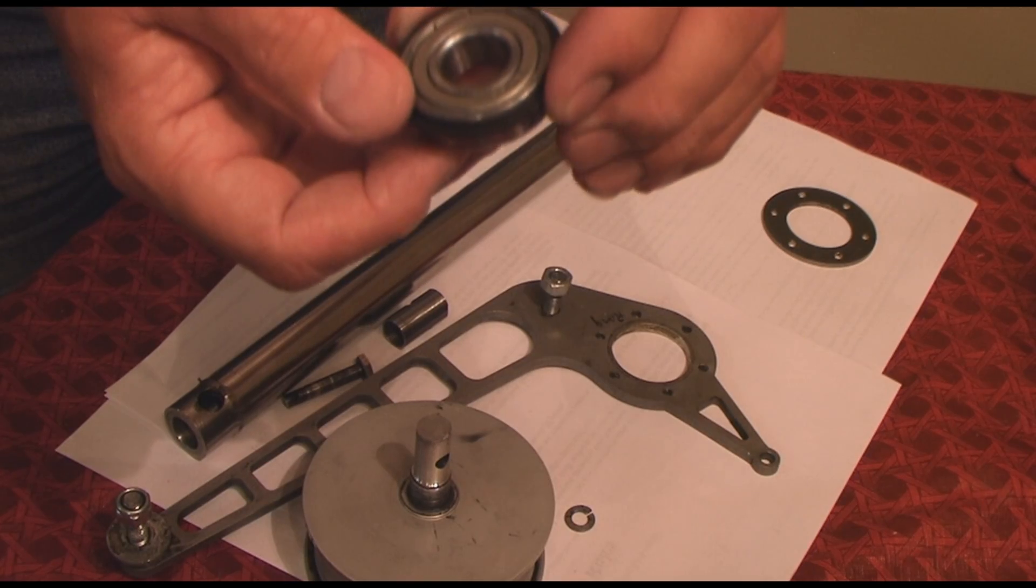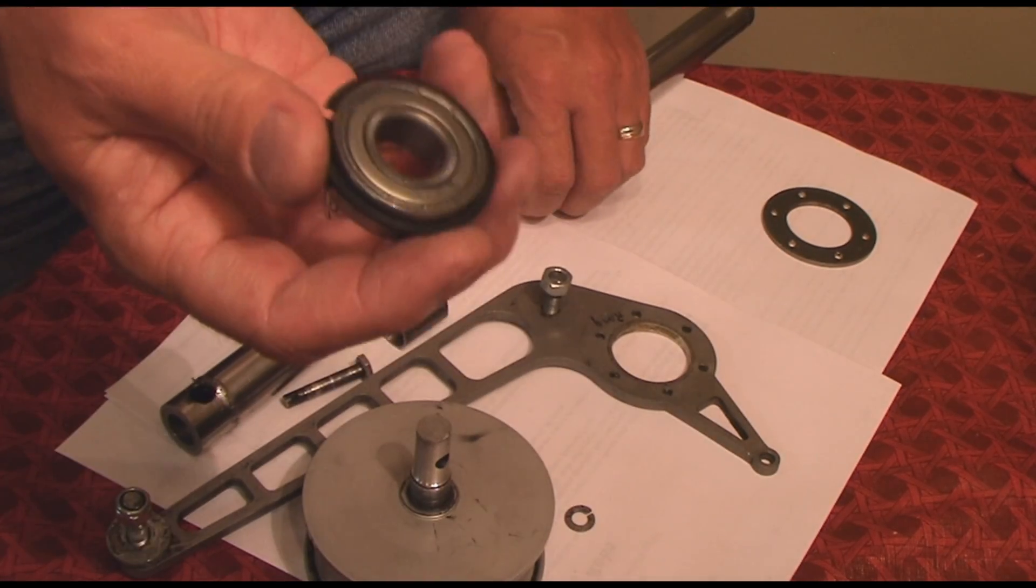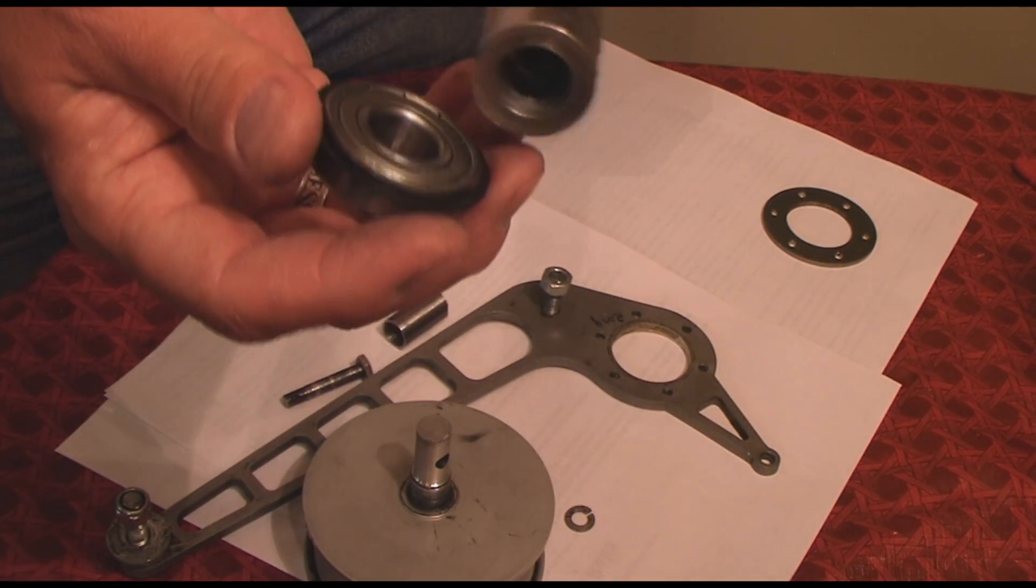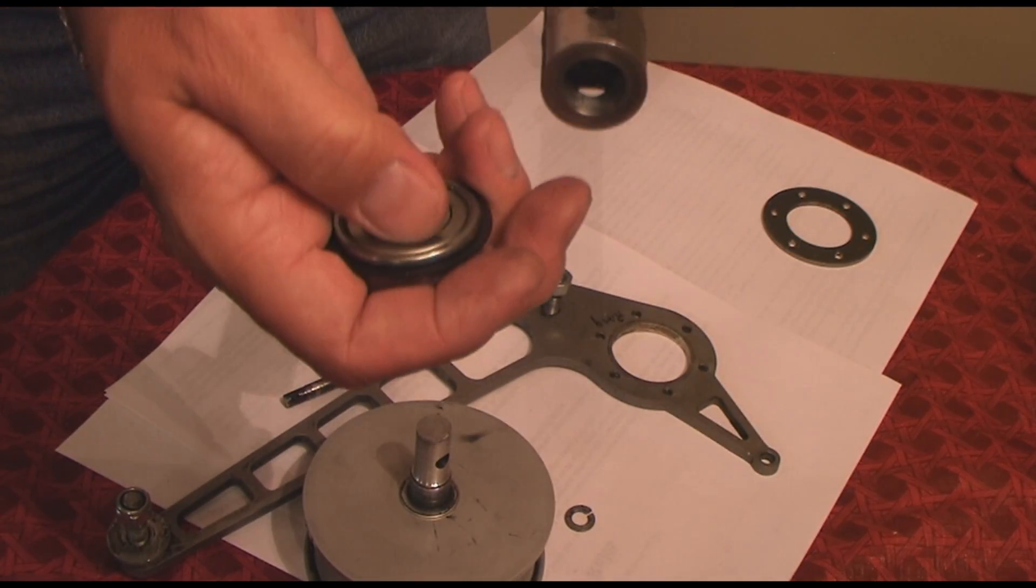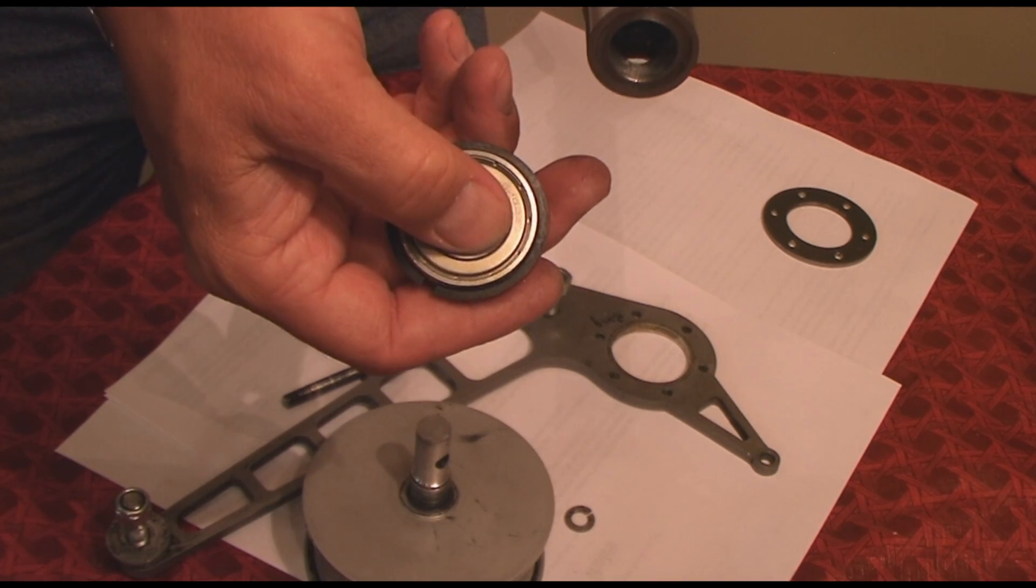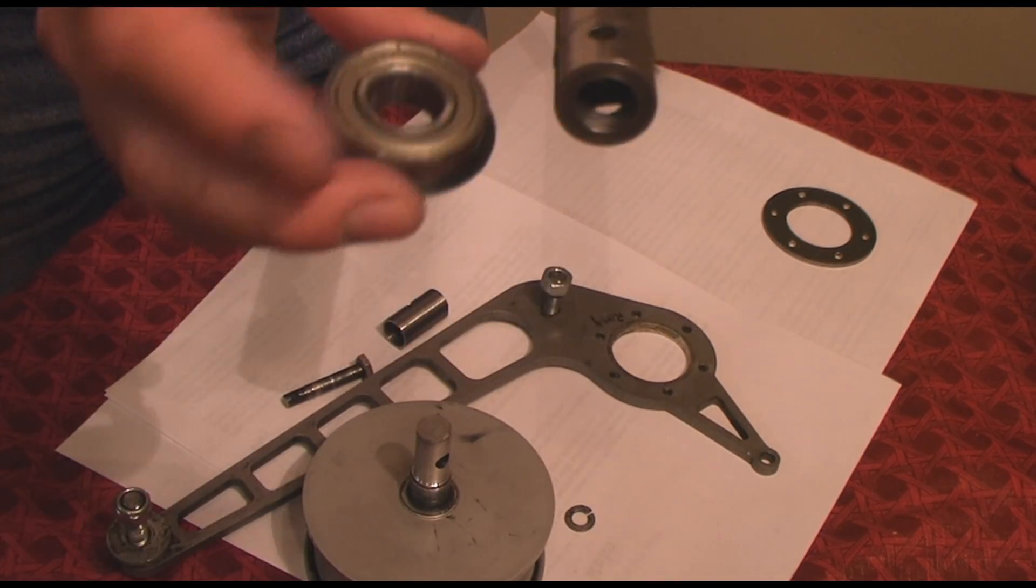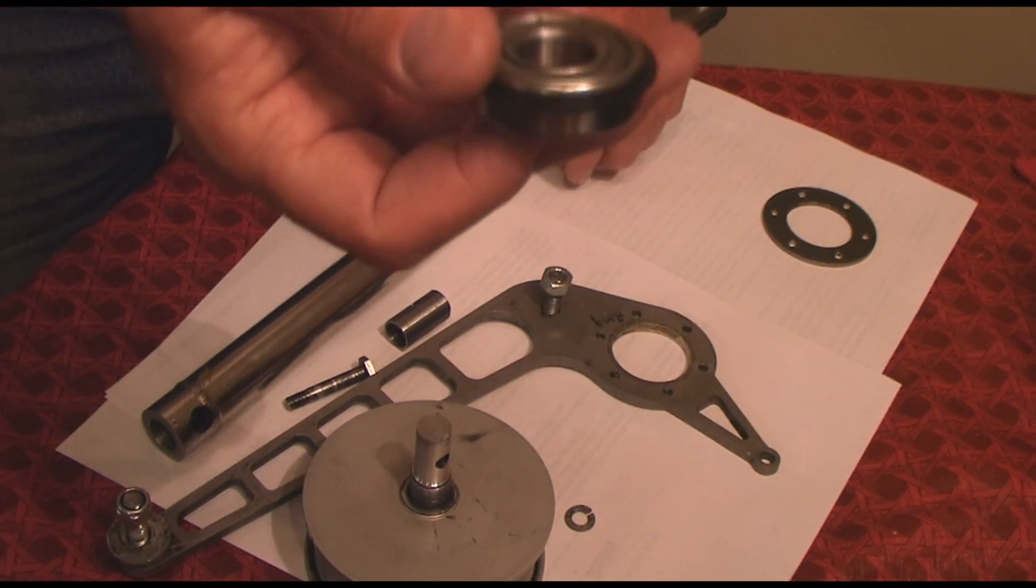This bearing failed also because when the bolt broke, the edge of the shaft came in contact with the bearing and nicked it right in the edge here, damaging the bearing. We had to buy a new bearing. This is a special type of bearing.